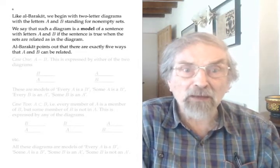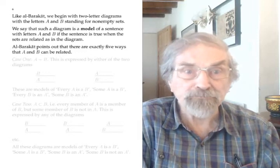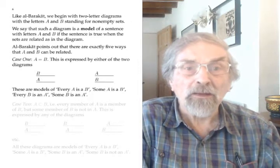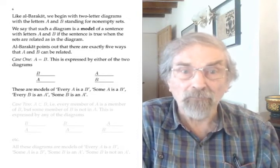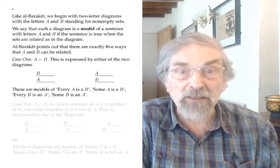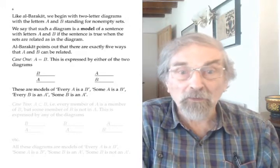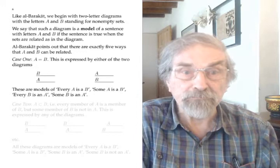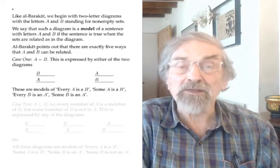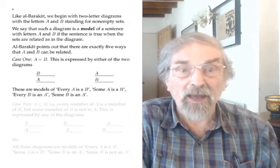Al-Barakat finds that every pair of non-empty sets falls under just one of five cases. The first case is that A and B are the same set — A equals B. There are two ways of writing this: one is to have the line for A immediately above the line for B, the same length, neither sticking out beyond the other; the other way has B above A. These two diagrams are models of — they make true — 'Every A is a B,' 'Some A is a B,' 'Every B is an A,' and 'Some B is an A.'